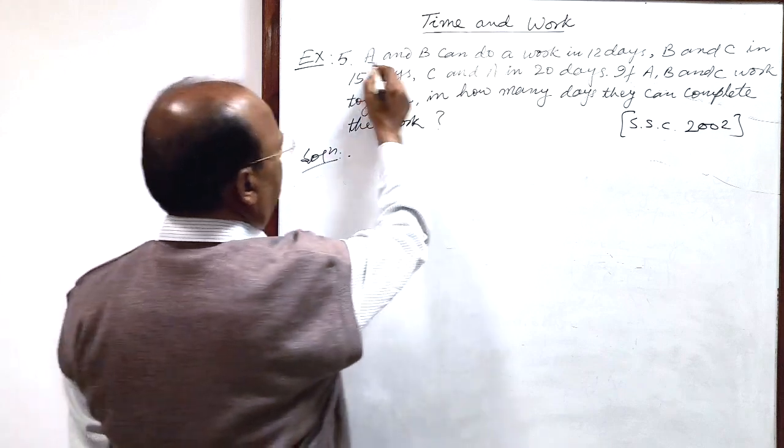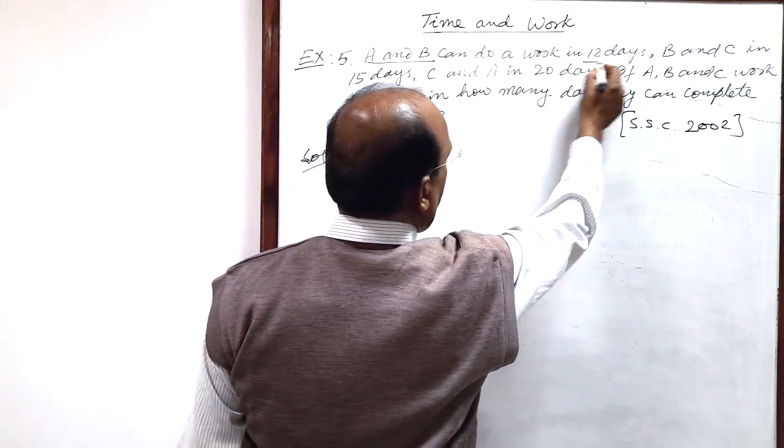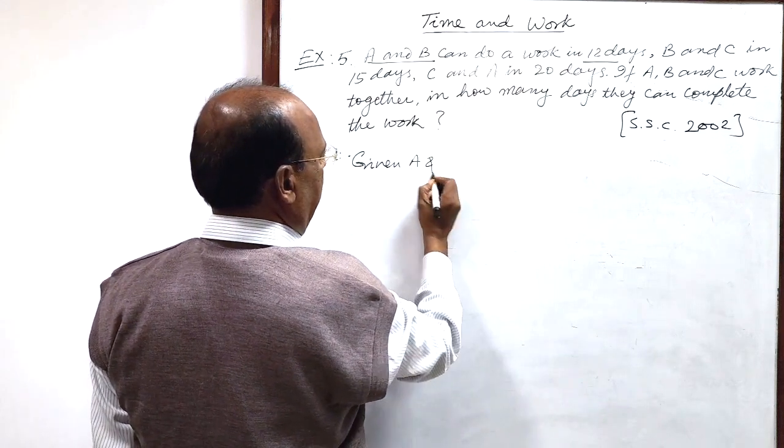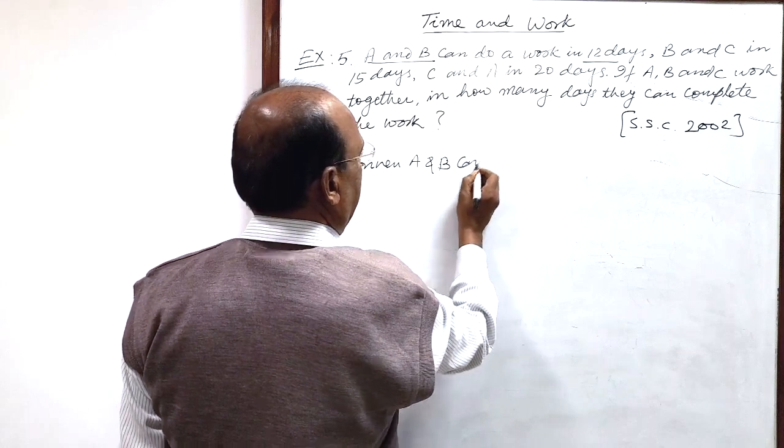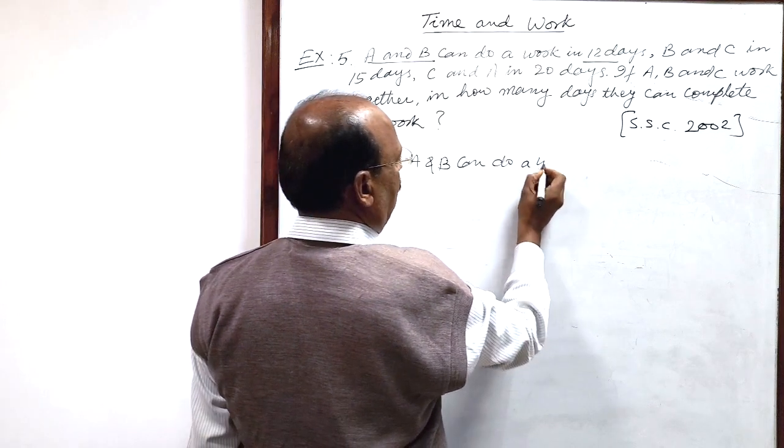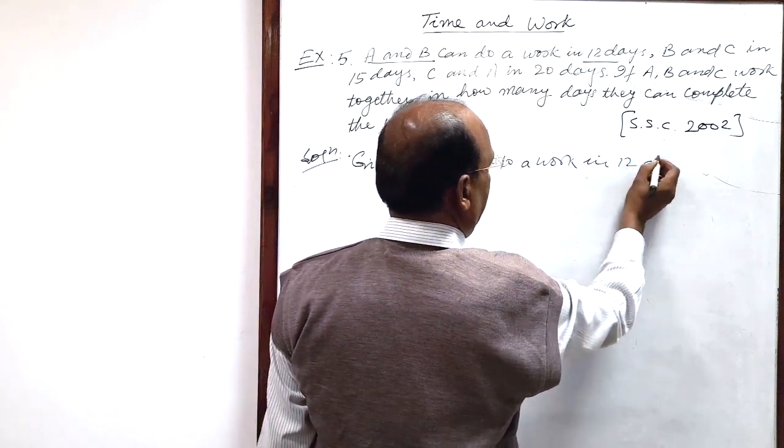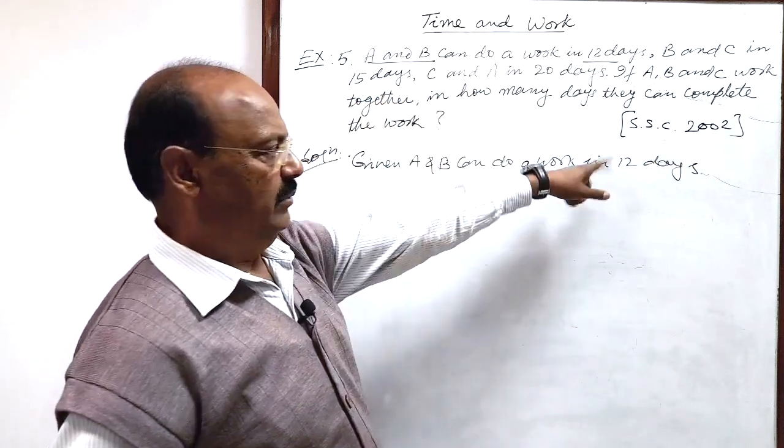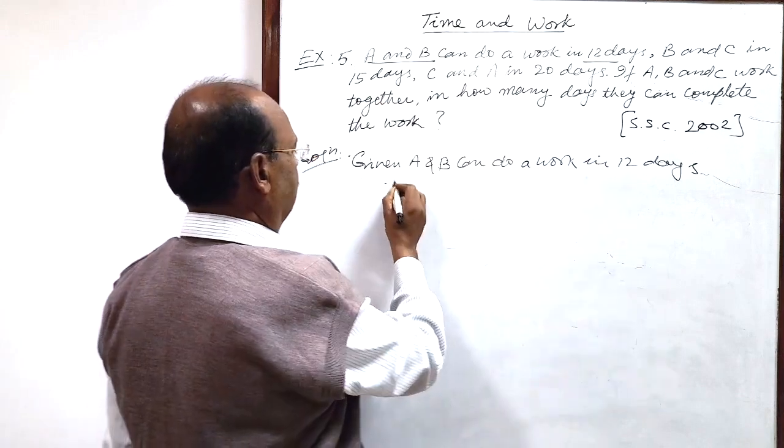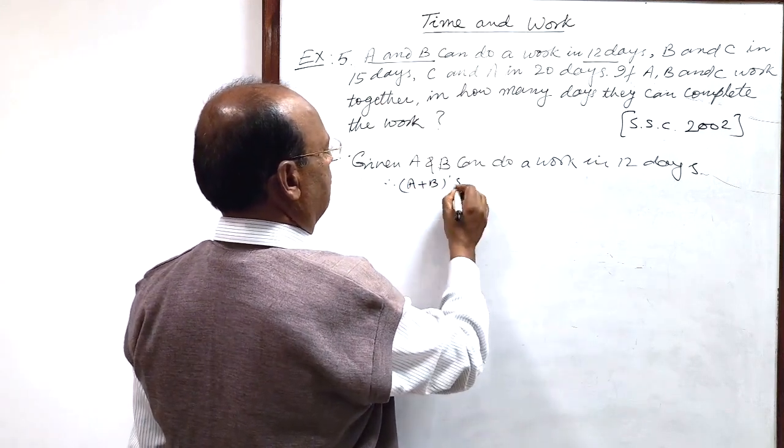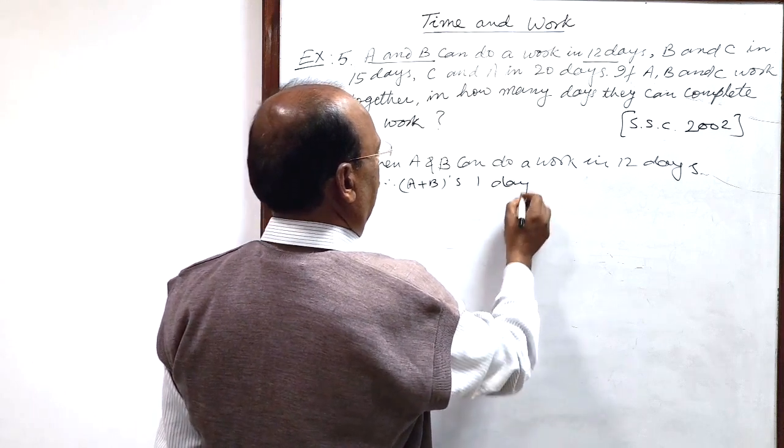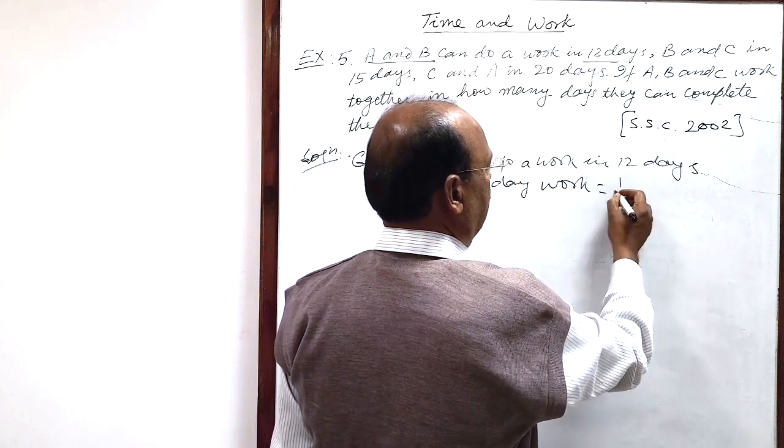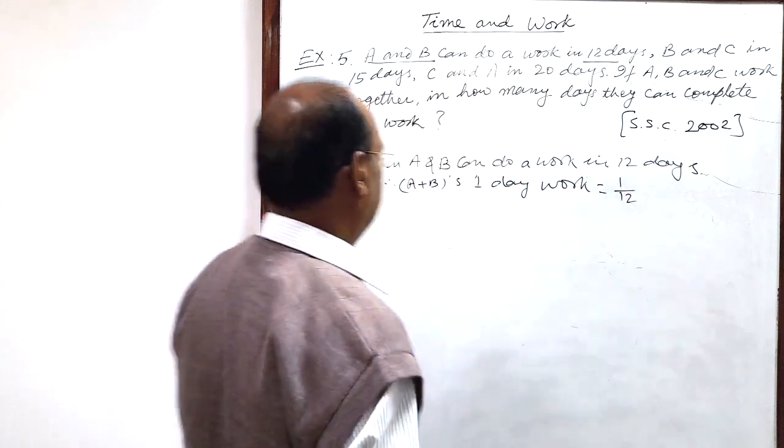Here given A and B can do a work in 12 days. So in one day, 1 by 12. Therefore, A plus B's one day work is the reciprocal of this, 1 by 12.